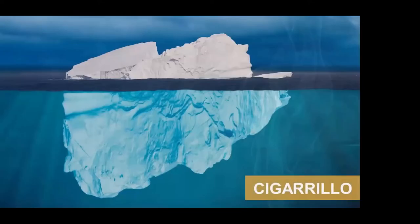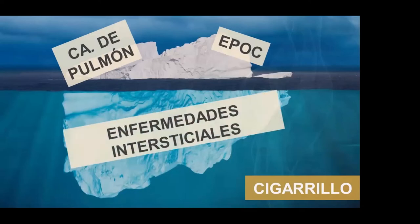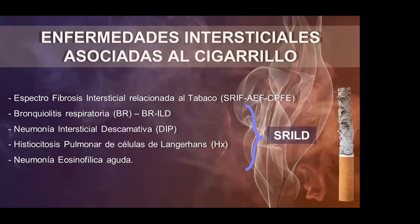El cigarrillo puede producir diferentes enfermedades — cáncer de pulmón, EPOC — pero hay un grupo de entidades menos conocidas que son las enfermedades intersticiales. Las podemos clasificar en: fibrosis intersticial relacionada al tabaco (SRIF) y combinación de fibrosis pulmonar y enfisema; y la SRILD (smoke-related interstitial lung disease), que incluye bronquiolitis respiratoria, neumonía intersticial descamativa, histiocitosis pulmonar de células de Langerhans y neumonía eosinofílica aguda.